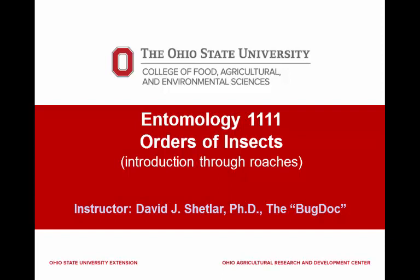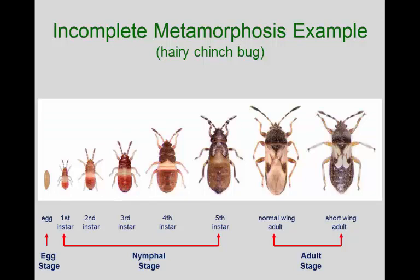What I want to do this afternoon is finish out those insects that have an incomplete life cycle. I actually wrote these as two separate lectures. We're going to finish out this first lecture that I should have finished on Tuesday, and then we'll finish the second lecture. We're talking about insects that have those three stages in their life cycle: egg, nymph, and adult.